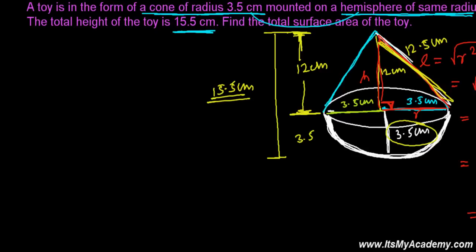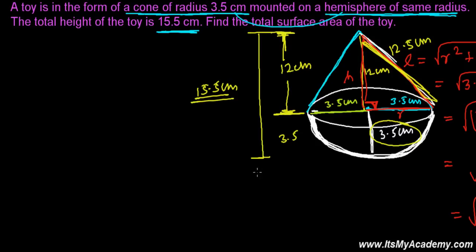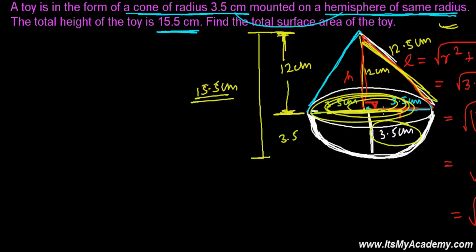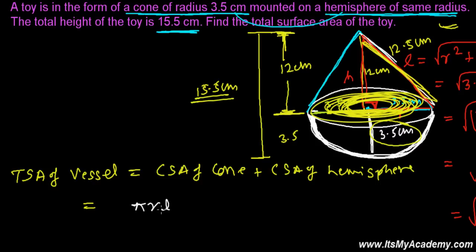Now we know the slant height, normal height, and radius — everything needed to find the total surface area of the toy. The total surface area equals the curved surface area of the cone plus the curved surface area of the hemisphere, because the flat circular base is not visible. So: Total surface area = CSA of cone + CSA of hemisphere.